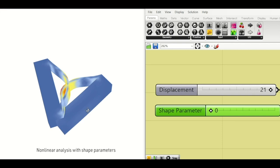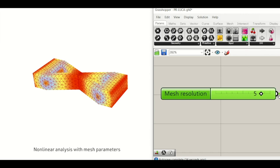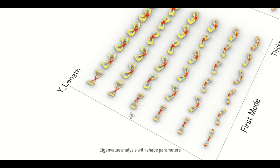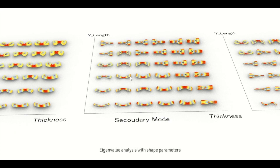Examples. Nonlinear analysis with shape parameters. Nonlinear analysis with mesh parameters. Eigenvalue analysis with shape parameters.